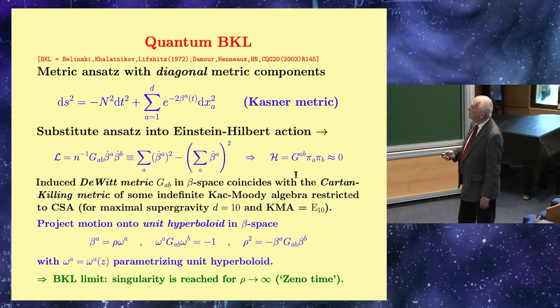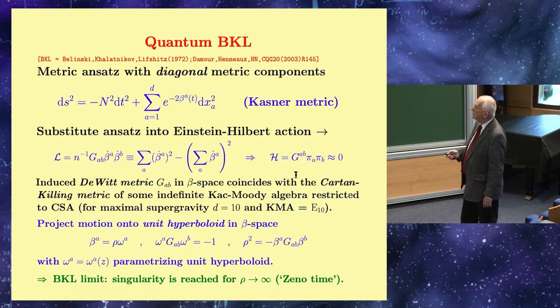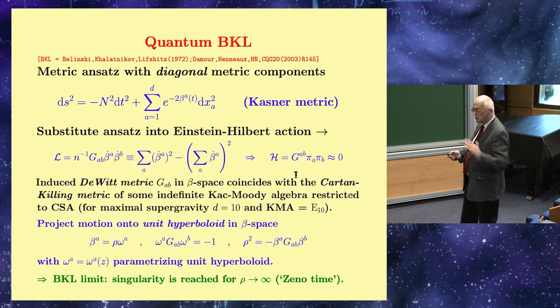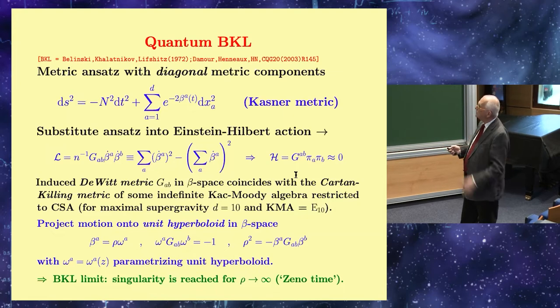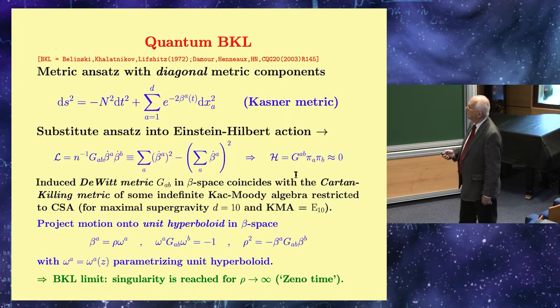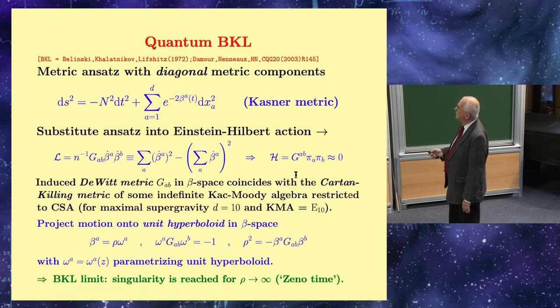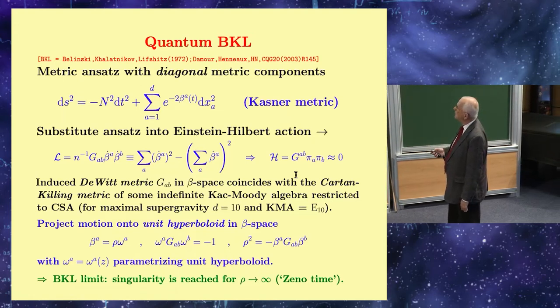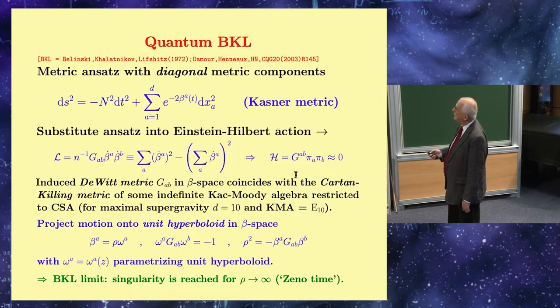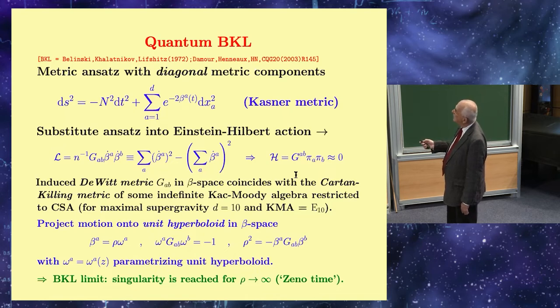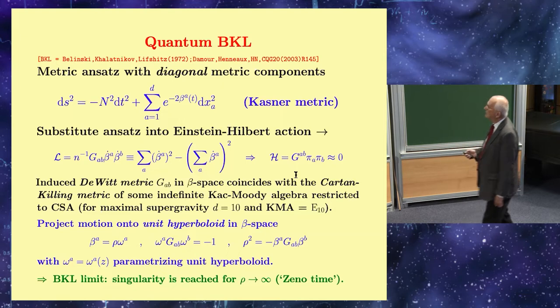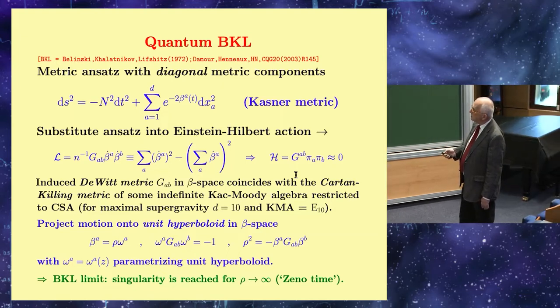But later, and this is the connection with E10, it turns out that this DeWitt metric coincides with the Cartan-Killing metric of some indefinite Kac-Moody algebra when you restrict it to the Cartan subalgebra, and then you identify the Cartan subalgebra with these scale factors. Indefinite is important here because this follows from the indefiniteness of the DeWitt metric. That's an essential feature which comes from gravity.